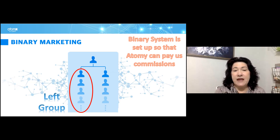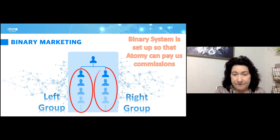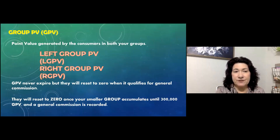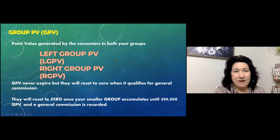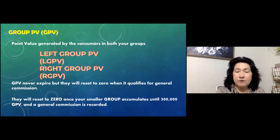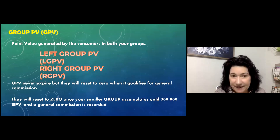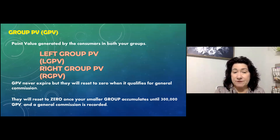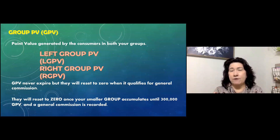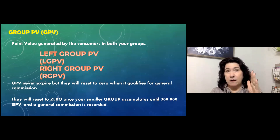So we've got our left group and our right group, and you're at the top. The point value generated by the consumers in both groups is your group PV. Group PVs don't expire, but they reset to zero when you make a commission. It resets once your smaller group accumulates to 300,000. Most of us, when we start out, our left leg — which is our sponsor's right leg — is frequently our strongest leg.